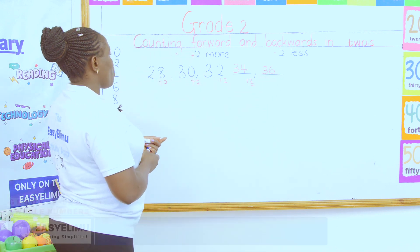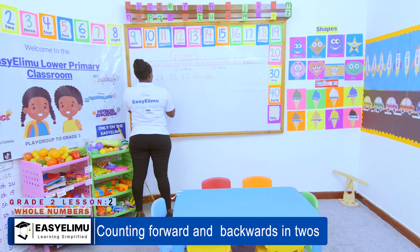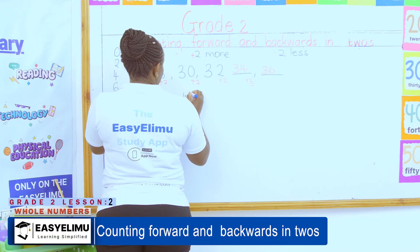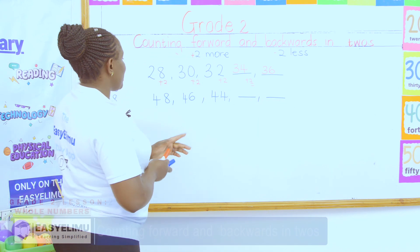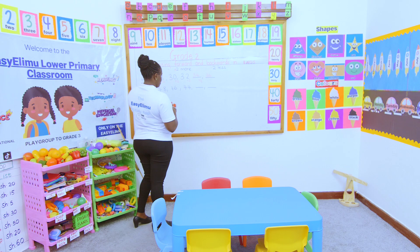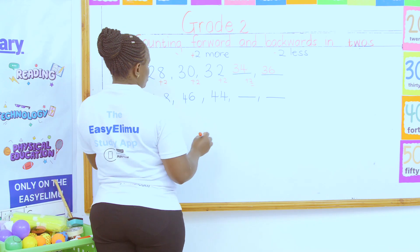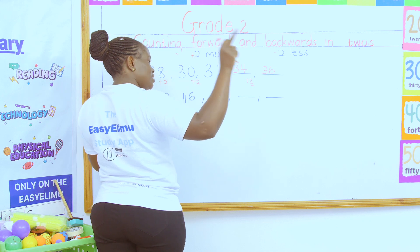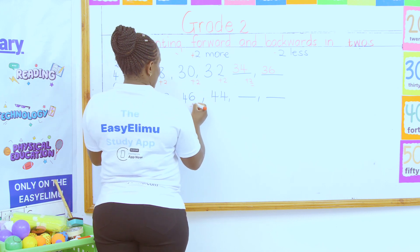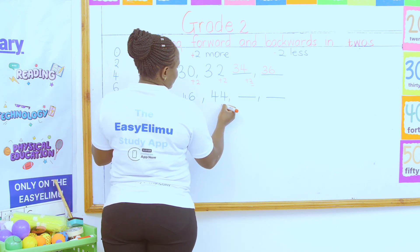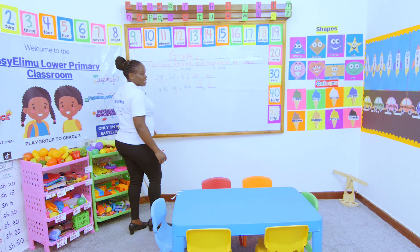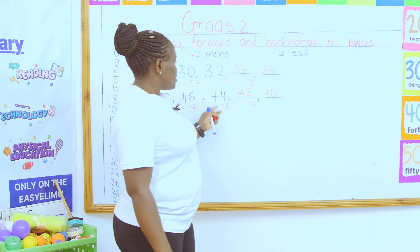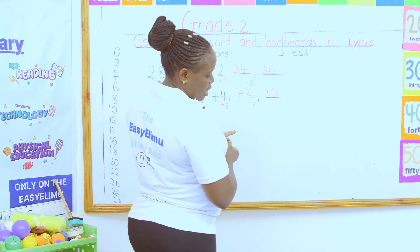What if the number is reducing? I have forty-eight, forty-six, forty-four. Now I'm supposed to count backward. My number is reducing: eight, six, four. So this is take away two. Eight take away two gives me six. Six take away two gives me four. Four take away two — what will it be? Forty-two. Then two take away two becomes zero. So my number reduces from 48, 46, 44, 42, and then forty.